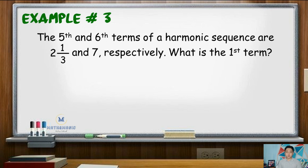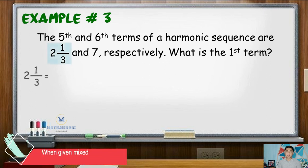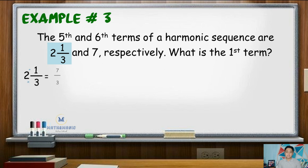Again, we need to make sure that all the numerators are the same. Rewriting the mixed number 2 and 1 third to an improper fraction, that will be 7 over 3. That is 2 times 3 plus 1 or 7, then you copy the denominator. Next, observe that the denominators of the 5th and 6th terms are 3 and 1 respectively. And given these terms, we can say that the common difference is negative 2, that is positive 1 minus 3.